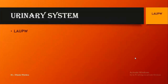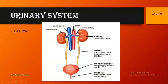As the kidney is the main organ that carries out nitrogenous waste removal, we are going to learn about the urinary system. The main parts of the urinary system are: a pair of kidneys, a pair of ureters, the urinary bladder, and the urethra. The renal vein connects to the inferior vena cava, and the branch of the aorta is the renal artery.